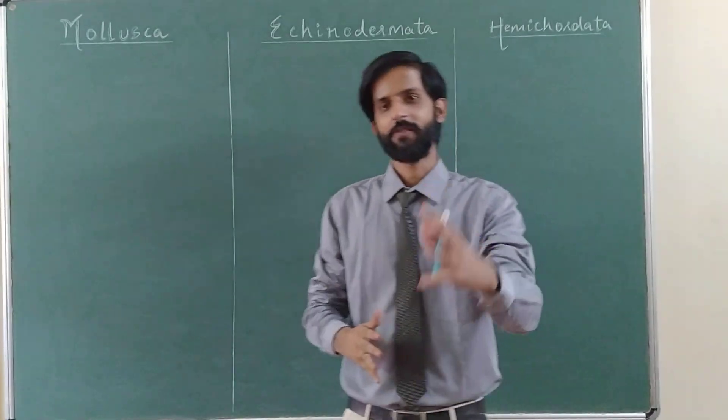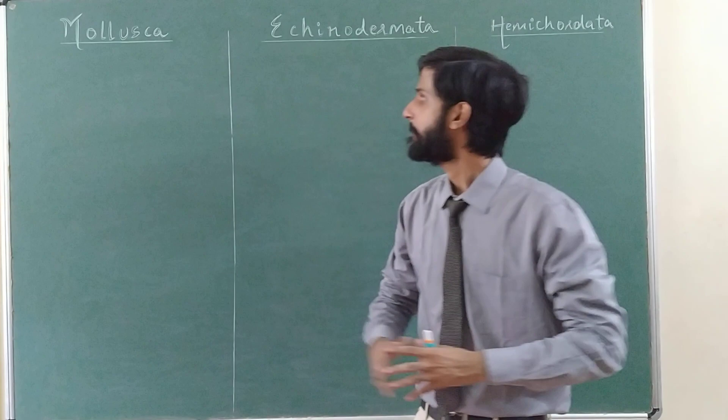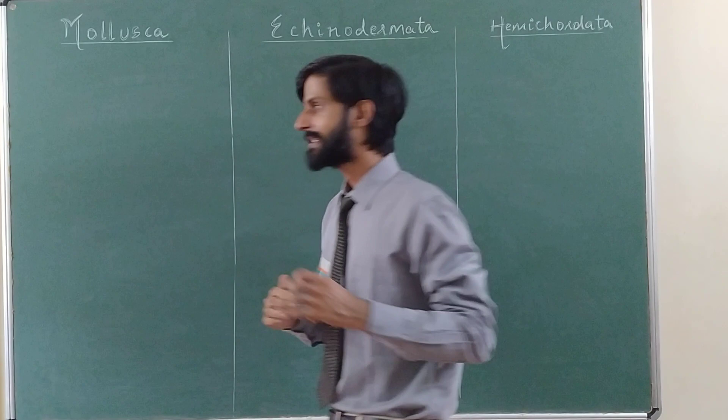Welcome back to Animal Classification. Today I will consider three phyla: Mollusca, Echinodermata, and Hemichordata. We will go through three characteristics of each, point by point.